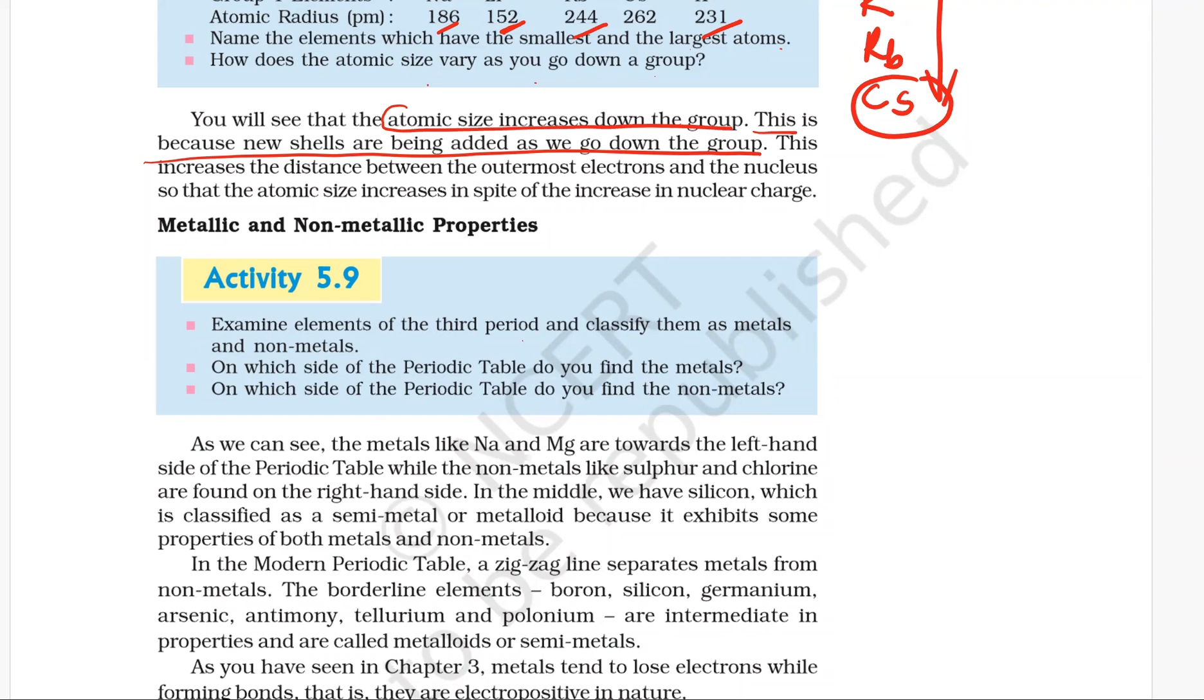Elements of third period are sodium, magnesium, aluminium, silicon, phosphorus, sulfur, chlorine, and argon.